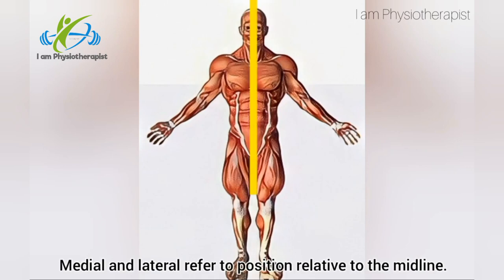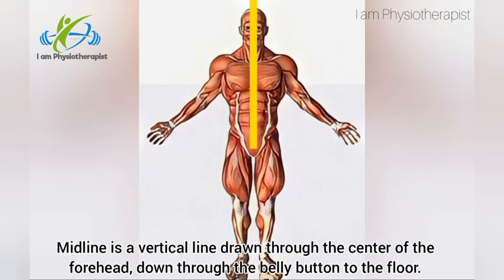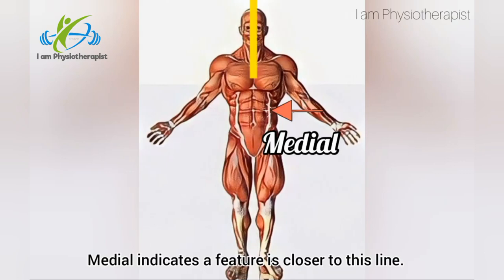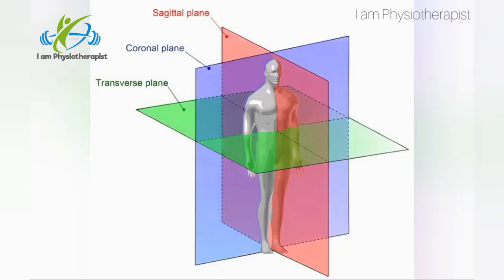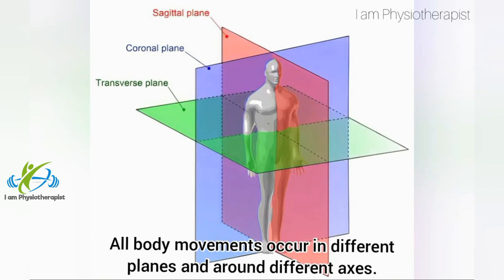Medial and lateral refer to position relative to the midline — a vertical line drawn through the center of the forehead, down through the belly button to the floor. Medial indicates a feature is closer to this line, while lateral indicates features further from this line.